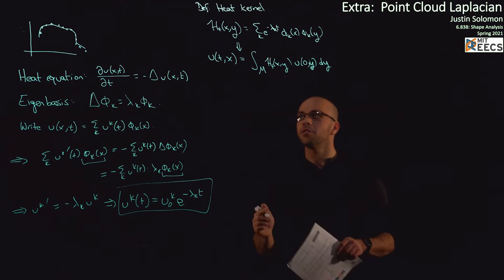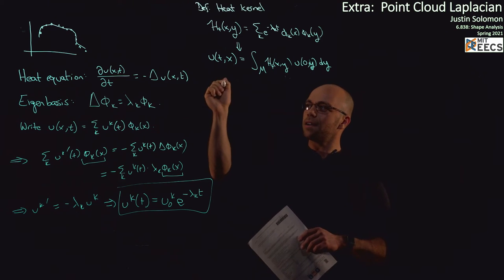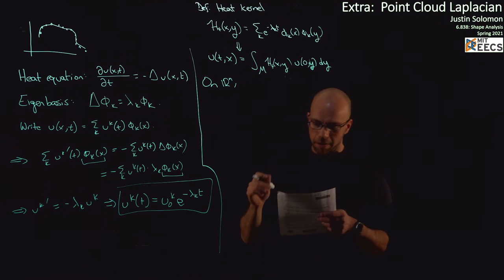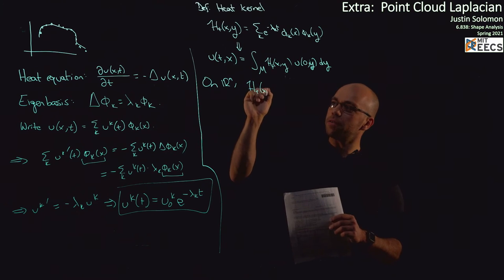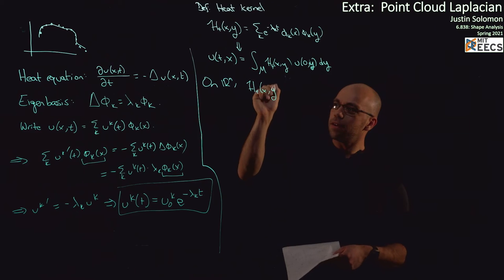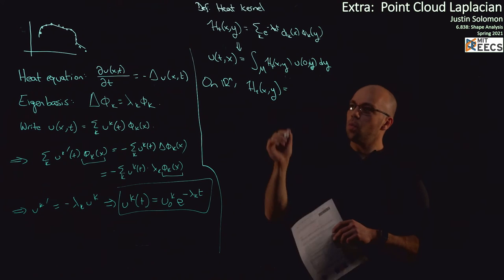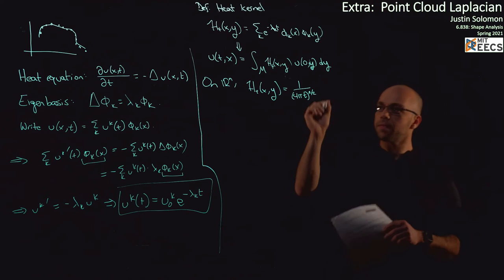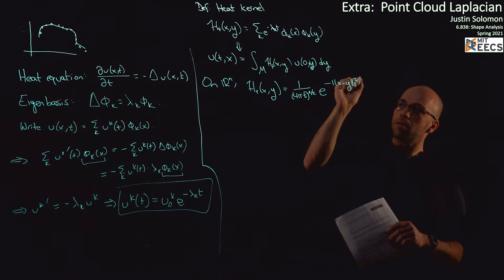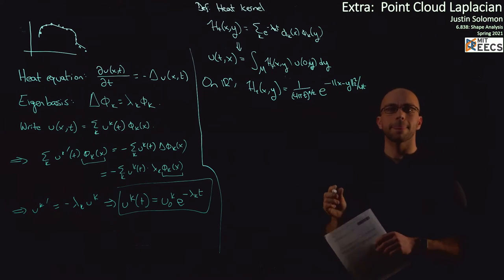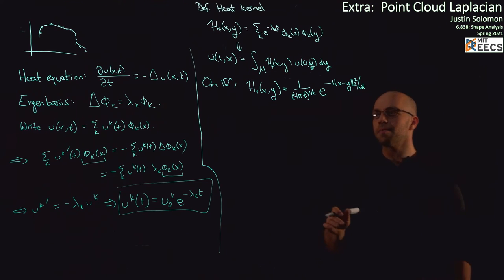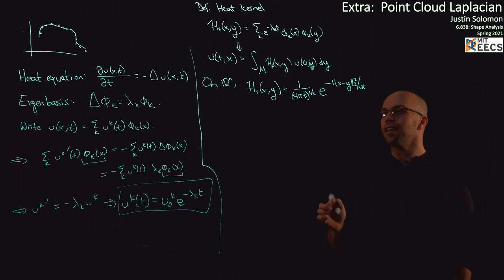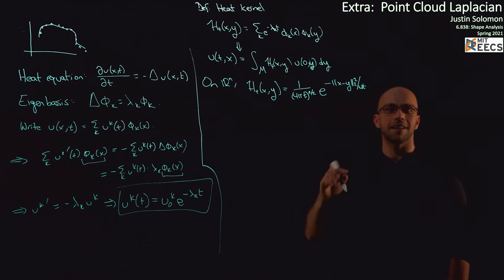One nice thing is that in Euclidean space, the heat kernel is known in closed form. On R^n, the heat kernel h_t(x, y) equals 1 over (4πt)^(n/2) times e to the minus norm of x minus y squared divided by 4t. This is the heat kernel in n-dimensional space. If you're a statistician, you recognize this object — it's a Gaussian distribution or a bell curve. Essentially, heat diffusion is the same as convolving against a Gaussian, which is absolutely true.